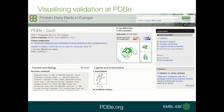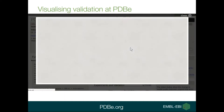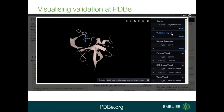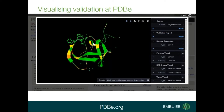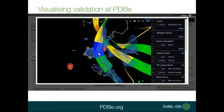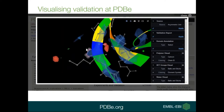At PDBe we can visualise this information. In the 3D viewer the structure is rotatable on the web page and can be coloured by geometric outliers from the validation report. Clicking on a residue shows the electron density — displayed either as wireframe or a more solid representation — so you can see for yourself how well the amino acid fits the electron density.